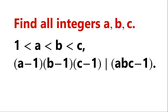Find all integers a, b, and c satisfying 1 < a < b < c, such that (a-1)(b-1)(c-1) is a divisor of abc - 1.